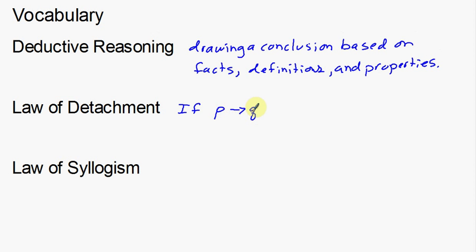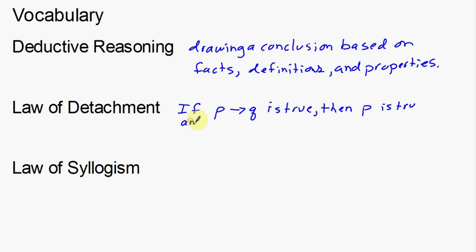If you have a hypothesis and a conclusion — what's called a conditional statement — if this conditional statement is true, then the hypothesis P is true, and Q, the conclusion, is true. If the conditional statement is in fact a true statement, then the pieces also have to be true. Then P is true and also Q is true.